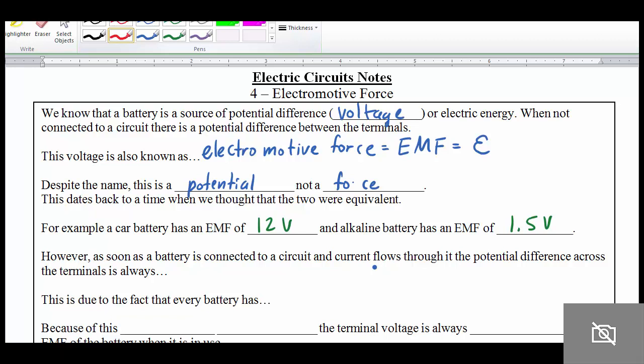when you measure the voltage that's actually coming out of the battery, or the potential difference across the terminals, it's always going to be less than the EMF.